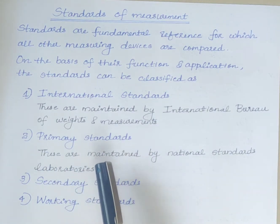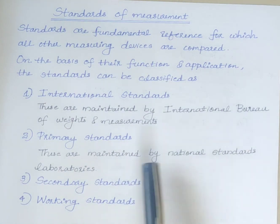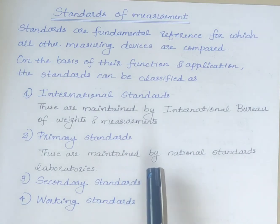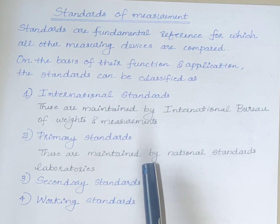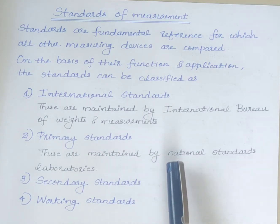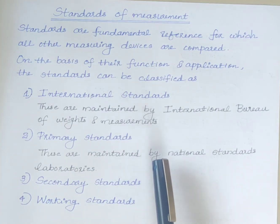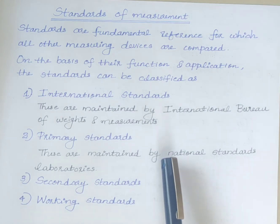The second type is primary standards. These standards are maintained by national standards laboratories in different parts of the world. Primary standards are not available for use outside the national laboratories. The main function of primary standards is the calibration of secondary standards.